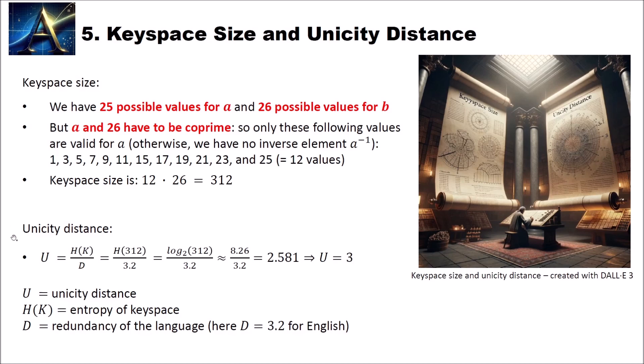And now let's compute the unicity distance. Remember, the unicity distance is a minimum number of ciphertext characters that we need when we perform cryptanalysis, that it is possible that we only obtain one valid solution. To compute the unicity distance, we divide the entropy of the key space by the redundancy of the language. The entropy of the key space is log 2 of 312. And the redundancy of the English language is 3.2. If we compute this, we get 2.581. And since we don't have fractional letters, we have to round this number up. So our unicity distance is 3. So we need at a minimum 3 letters for cryptanalysis to obtain only a single valid solution.